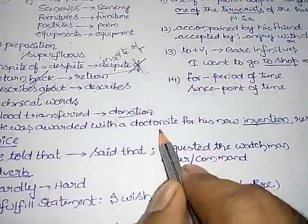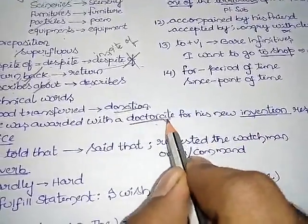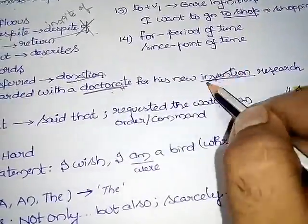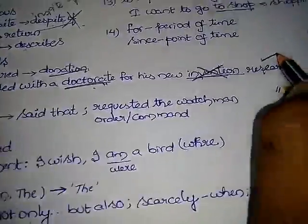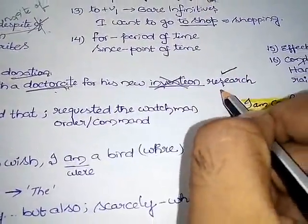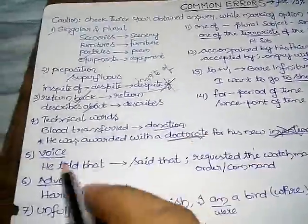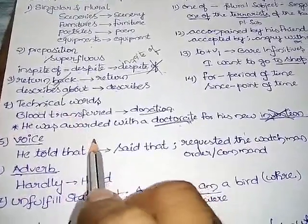He was awarded with a doctorate for his new invention. Invention. For doctorate, there should be research thesis. So it should not be invention. So the answer is research. The answer is research for the doctorate. That is technical words in the form of errors.